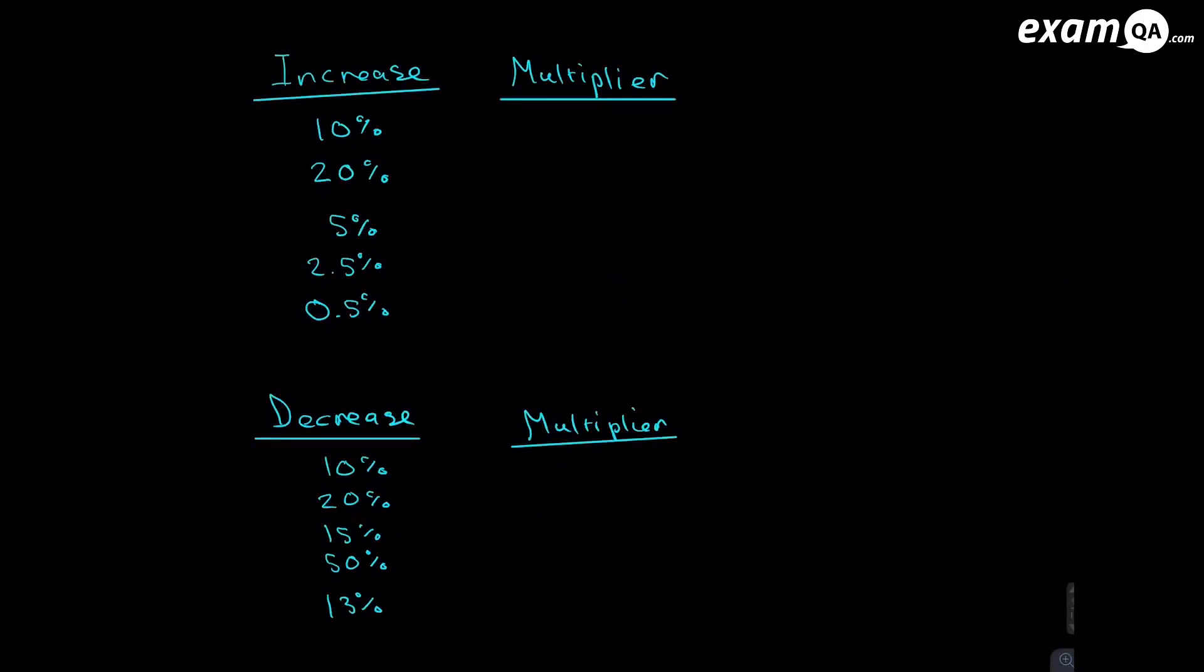Just to get warmed up, we're just going to look at a few examples. So we need to be good at finding that multiplier which increases something by a certain percentage, or in terms of depreciation, decreases something by a certain percentage. So let's look at how we do these.